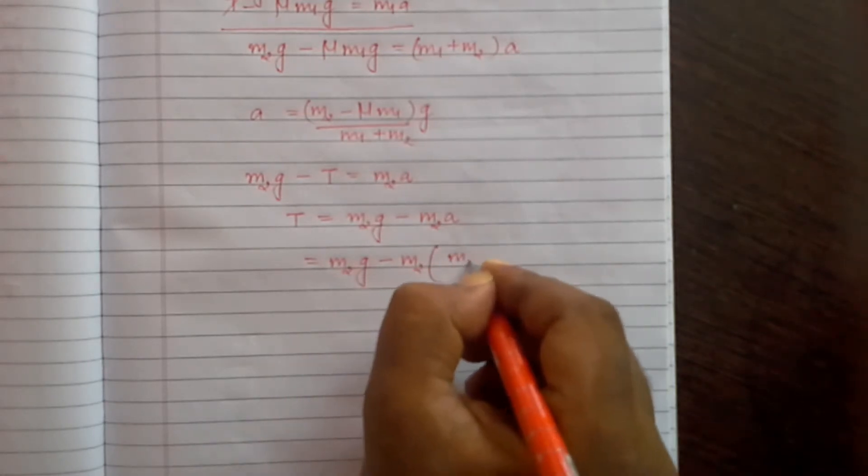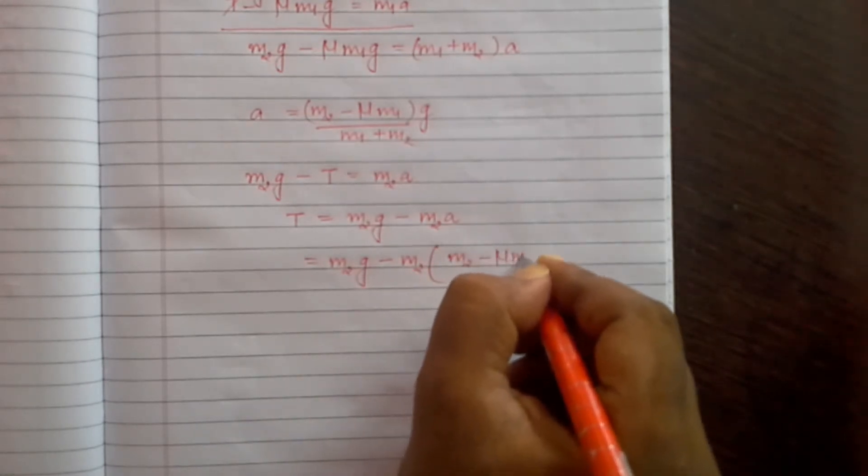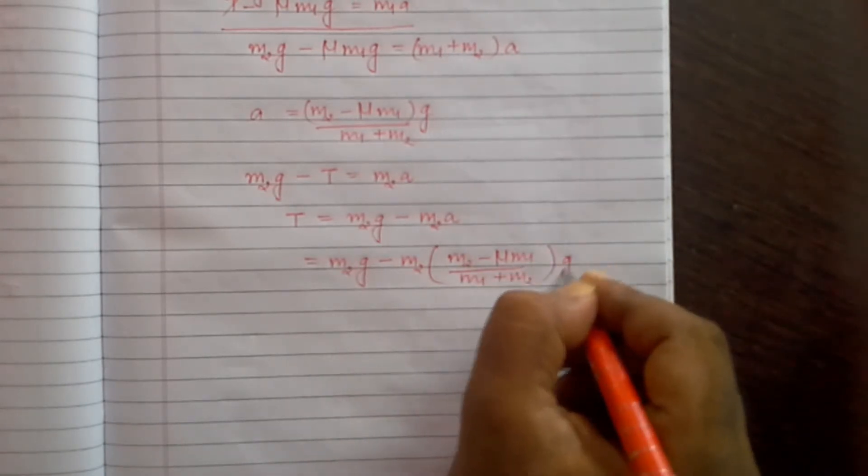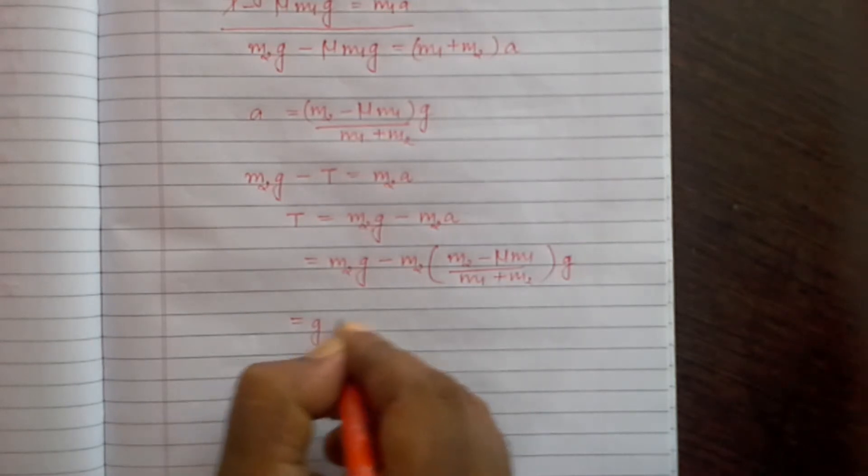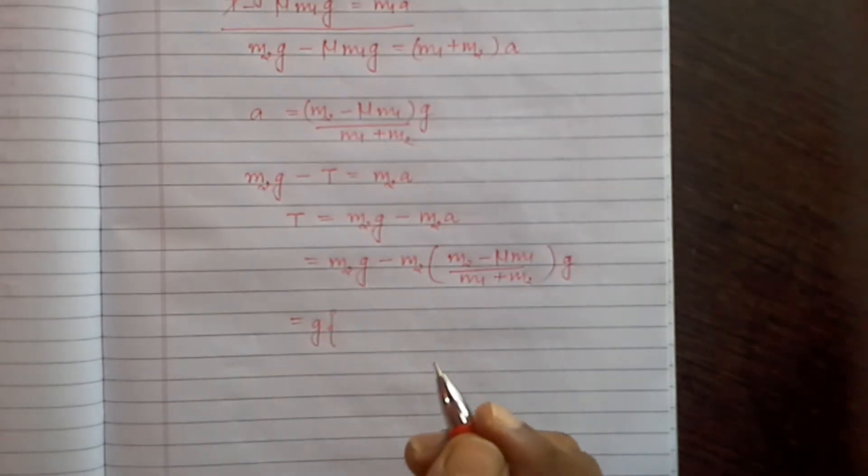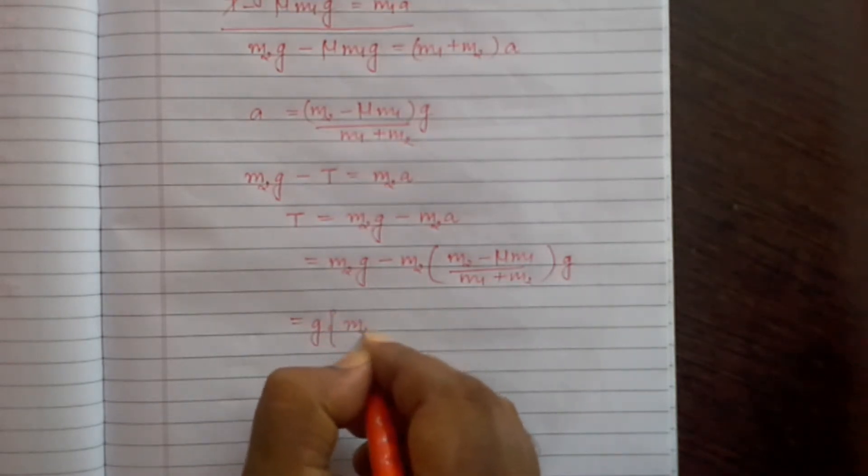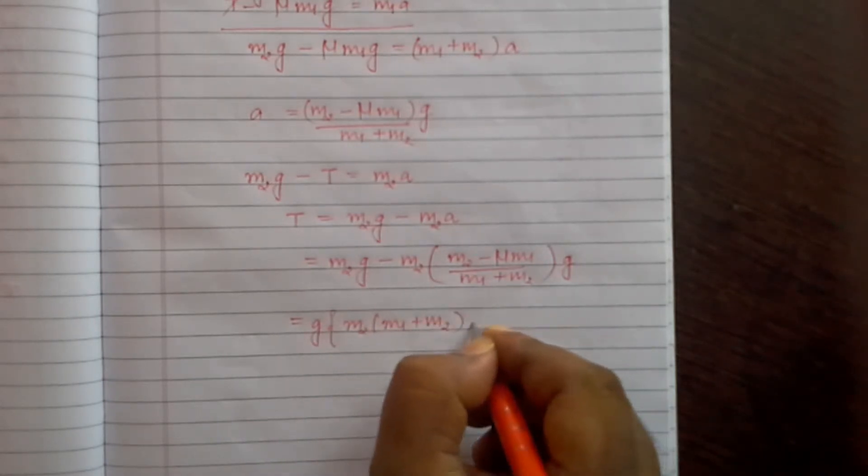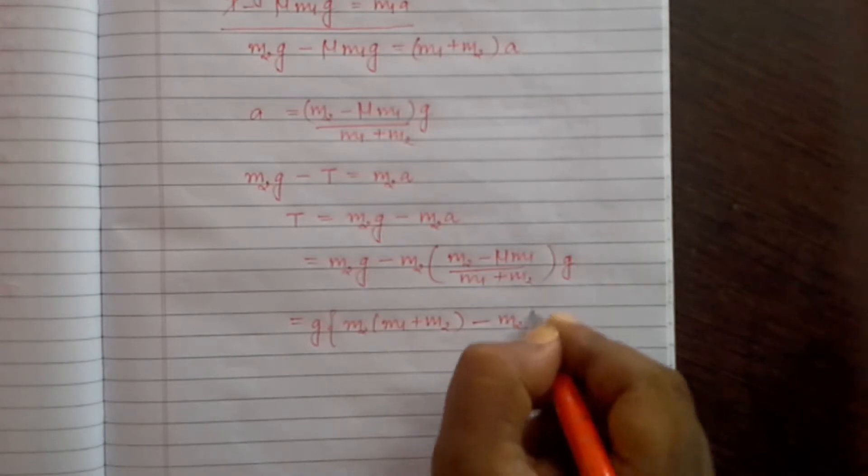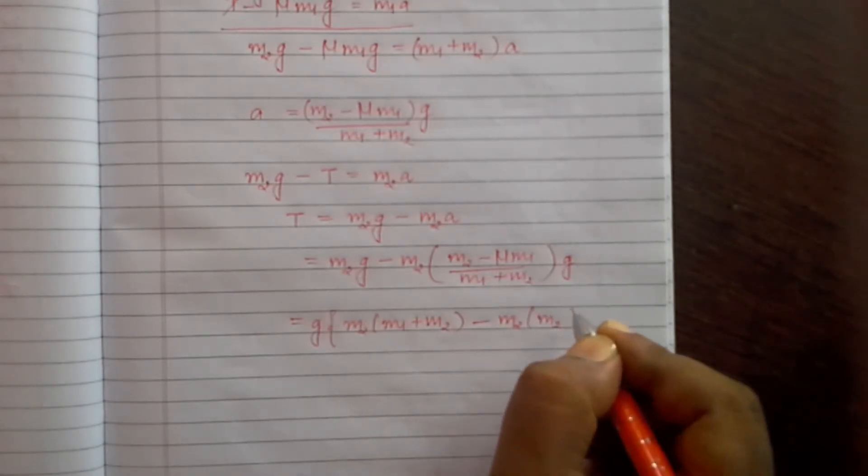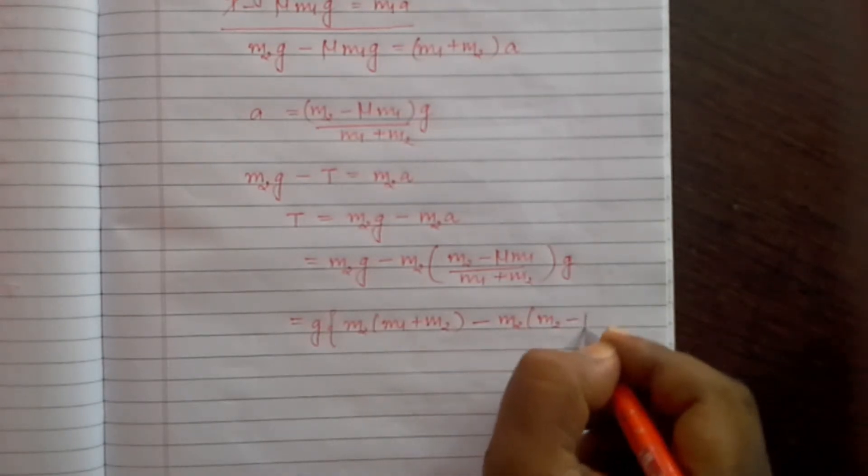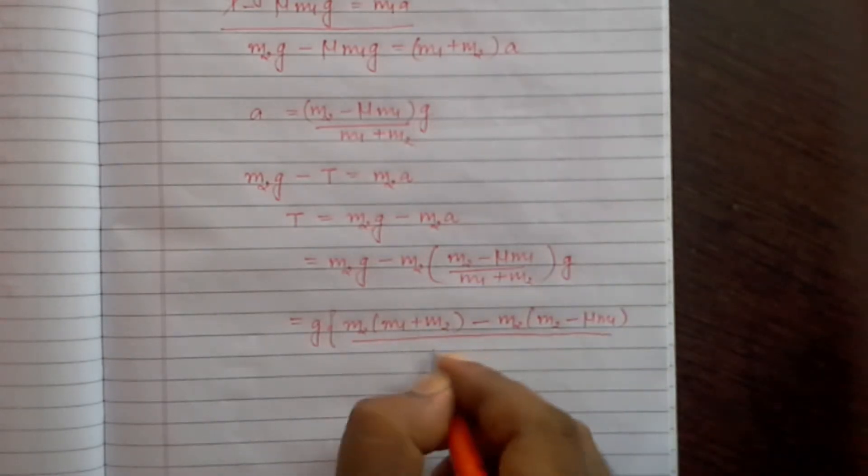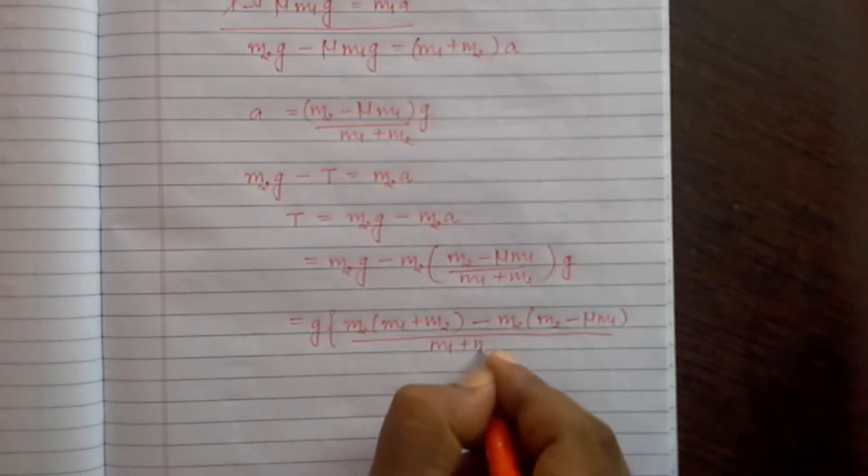Now to find tension, we take g common: M2 into (M1 plus M2) minus M2 into (M2 minus mu times M1), whole divided by (M1 plus M2).